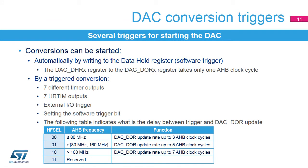DAC output conversion is started by writing to the data hold register using software. Seven different timer outputs, seven different HRTIM outputs, and an external IO or software can trigger a DAC conversion. When a software trigger is used, the content of the data hold register is transferred to the corresponding data output register after one AHB clock cycle. When a trigger occurs in trigger mode, the transfer happens after three, five, or seven AHB clock cycles, depending on the AHB clock frequency.